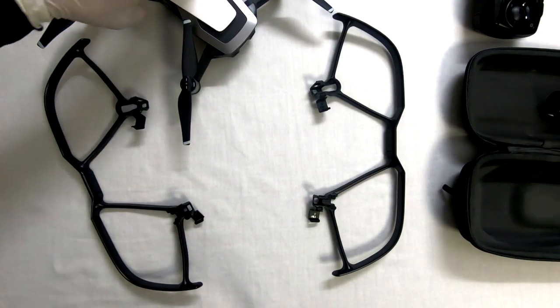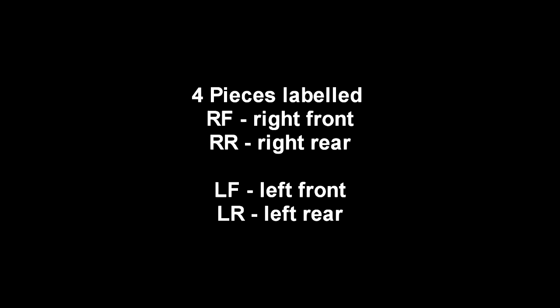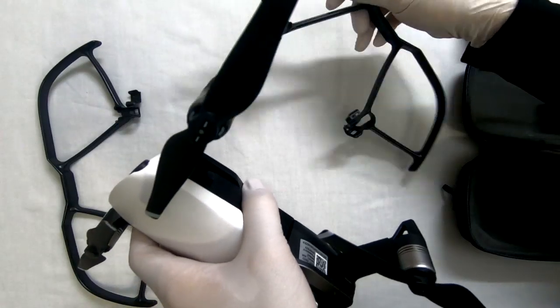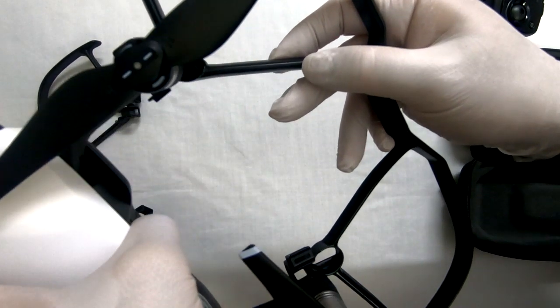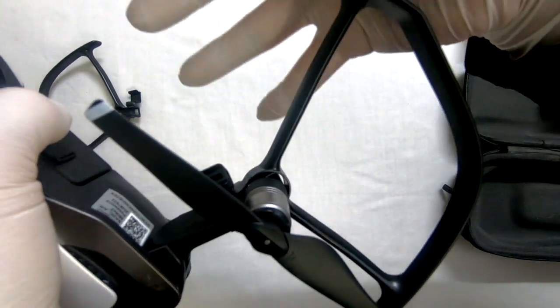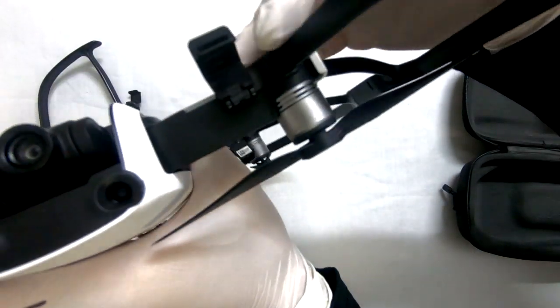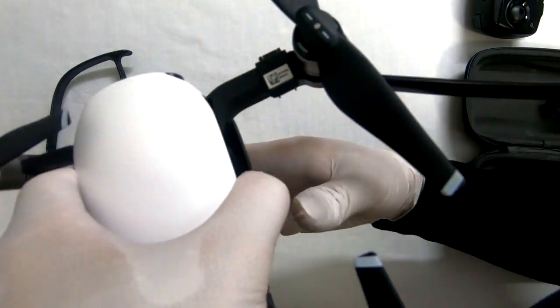The next little thing I want to go over are the propeller guards. There are four pieces to the propeller guards. They are labeled on the inside: RF for right front, RR for right rear, LF for left front, and LR for left rear. Then simply line up the propeller guard with the arms and use the little plastic clips on the propeller guard to secure itself to the drone.